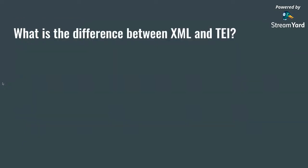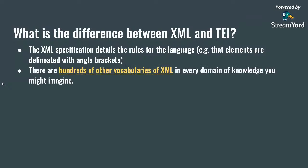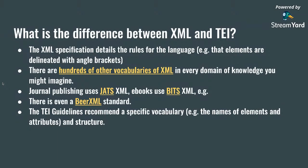So what's the difference between XML and TEI? The XML specification details the rules for the language — elements in XML are delineated with angle brackets. There are many other vocabularies of XML in every domain of knowledge. In journal publishing there's an XML vocabulary called JATS; e-books use ePub for book interchange. All of these are written in XML but have different vocabularies. There's even a beer XML standard. The TEI recommends a specific vocabulary and structure for naming elements and attributes for humanities data.